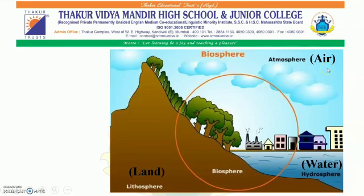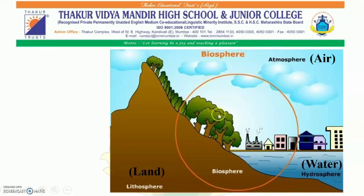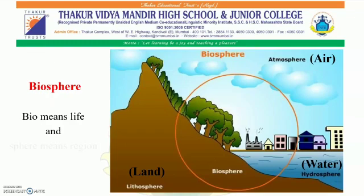Air is called earth's atmosphere. Water is called earth's hydrosphere. And land is called earth's lithosphere. All these together are called biosphere. Bio means life, and sphere means region. So, living things and the part of the lithosphere, hydrosphere and atmosphere which they occupy are together called biosphere.